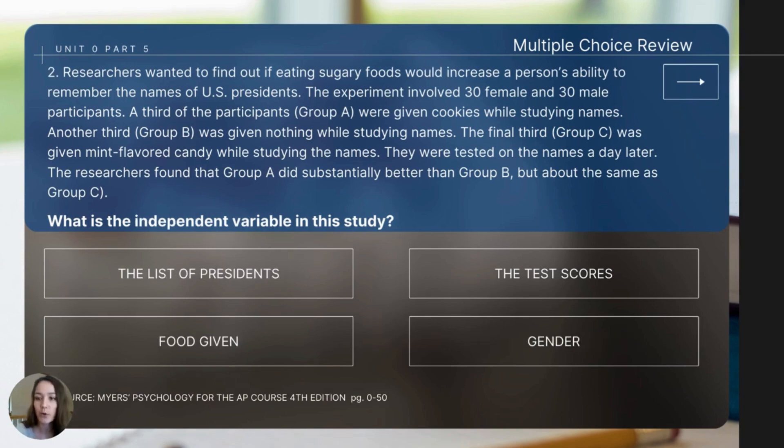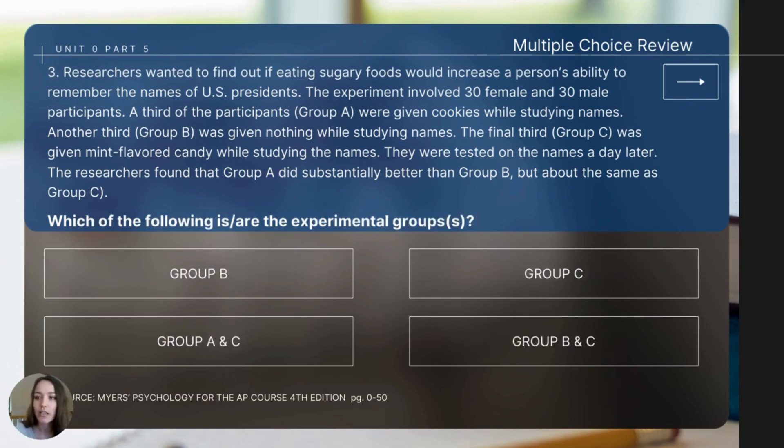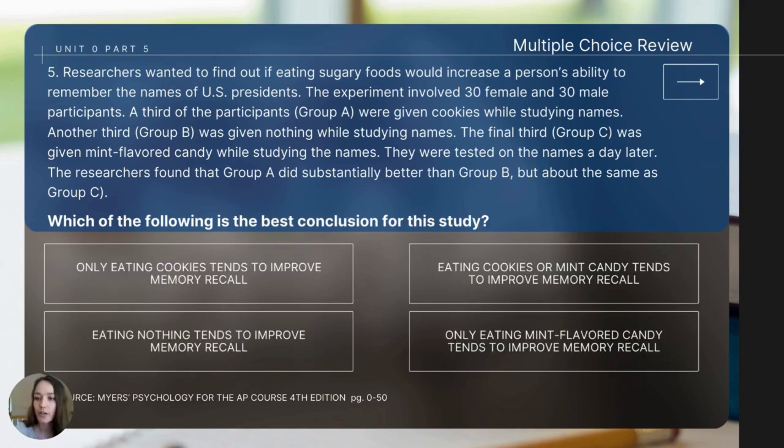Using the same experiment from question number one, what is the independent variable in this study? In the same study, which of the following is or are the experimental group or groups? The next question states, which of the following is or are the control group or groups? The final question reads, which of the following is the best conclusion for this study?